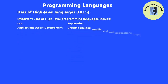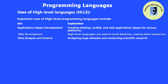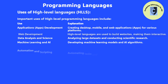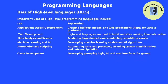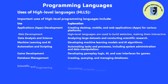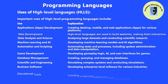Important uses of high-level programming languages include: application development — creating desktop, mobile, and web applications for various platforms; web development — high-level languages are used to build websites, making them interactive and functional; data analysis and science — analyzing large datasets and conducting scientific research; machine learning and AI — developing machine learning models and AI algorithms; automation and scripting — automating tasks and processes including system administration and data manipulation; game development — developing gameplay logic, AI, and user interfaces for games; database management — creating, querying, and managing databases; scientific and engineering simulations — simulating complex systems; and business software — developing enterprise-level software for various industries, as well as educational tools such as e-learning platforms.